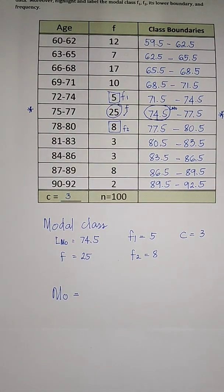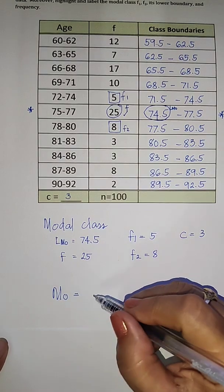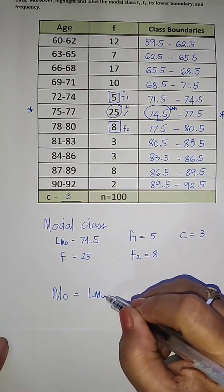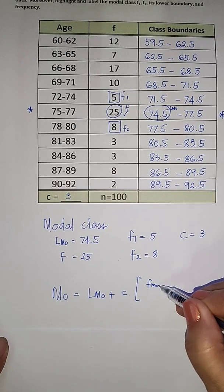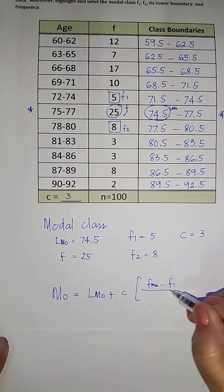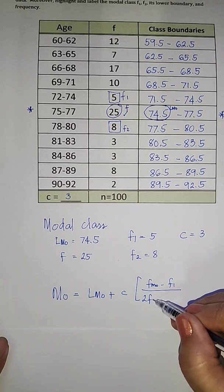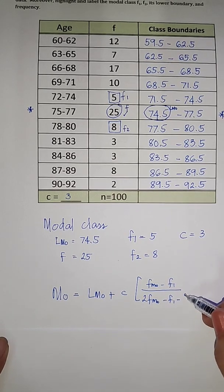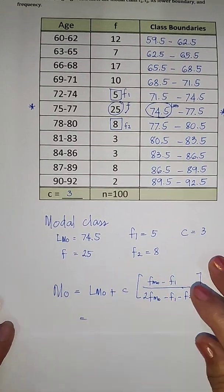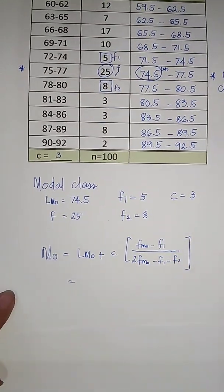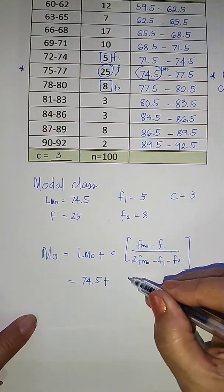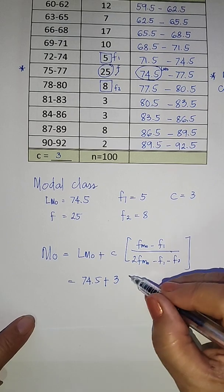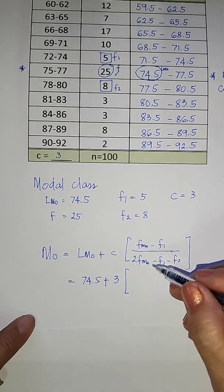And then using the formula for the modal class, we have LMO plus C times FMO minus F1 all over 2 times FMO minus F1 minus F2. So the lower limit, we simply substitute the values here, 74.5 plus C of 3 times...